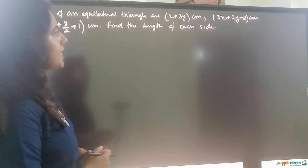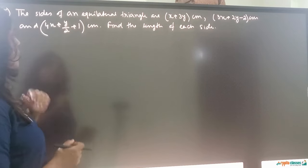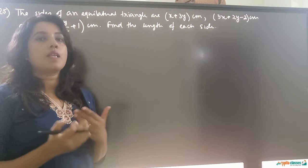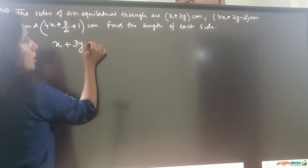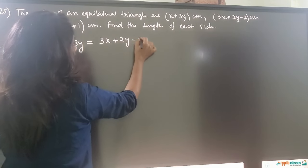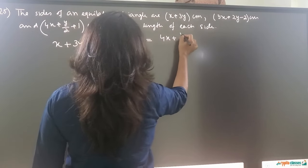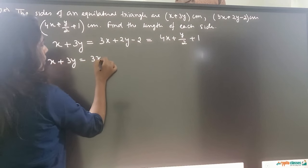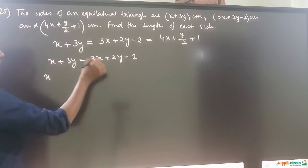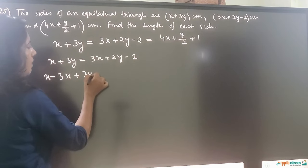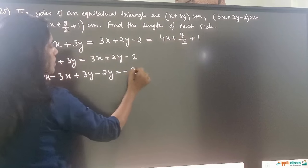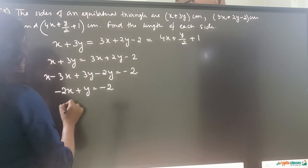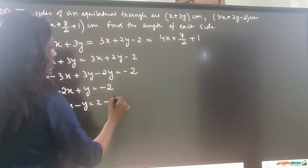Question 25: the sides of an equilateral triangle are (x+3y) cm, (3x+2y−2) cm, and (4x + y/2 + 1) cm. Find the length of each side. Since all sides of an equilateral triangle are equal, we set x plus 3y equal to 3x plus 2y minus 2. Rearranging: minus 2x plus y equals minus 2, or 2x minus y equals 2. This is equation 1.